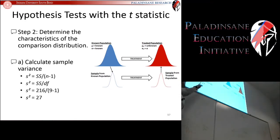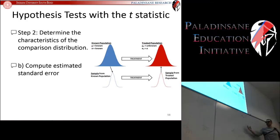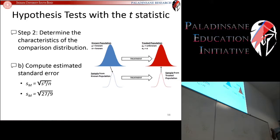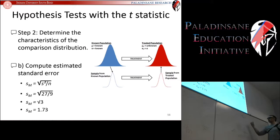Now we're ready to compute the estimated standard error. We take the variance divided by the sample size and take the square root of the whole equation — the textbook does it this way, which is mathematically equivalent to taking the standard deviation divided by the square root of sample size. We end up with the square root of 3, which is approximately 1.73. So the estimated standard error — the spread of our comparison distribution — is 1.73.